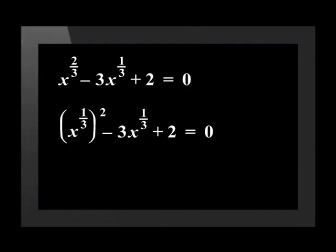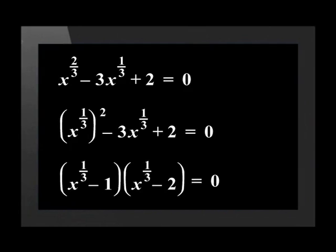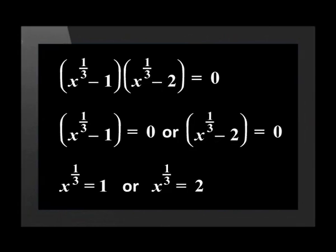First, we have to factorize the trinomial. We can write this as x to the power of one-third, squared, minus 3x to the power of one-third plus 2. We factorize this to get, in the first bracket, x to the power of one-third minus 1, and in the second bracket, x to the power of one-third minus 2. This is a quadratic equation, so we let each bracket equal 0 and solve for x.